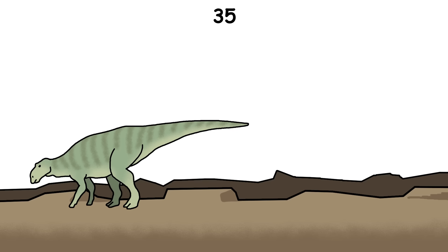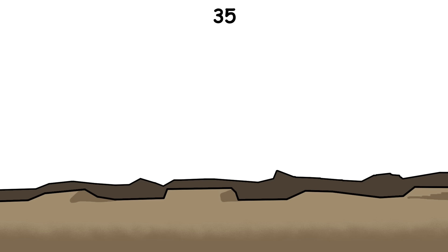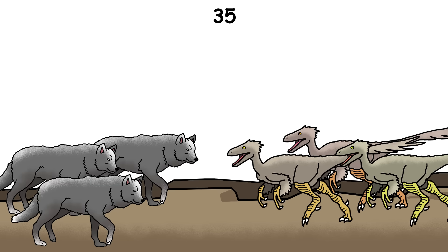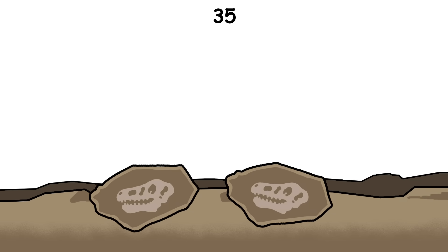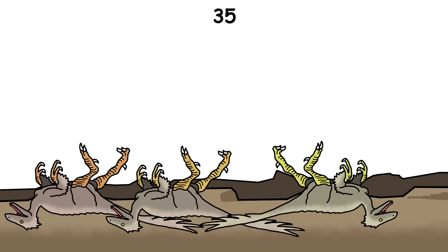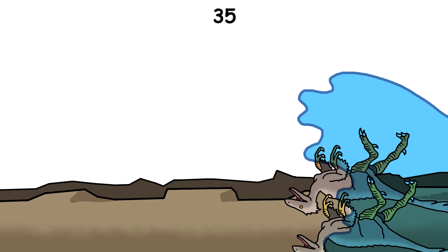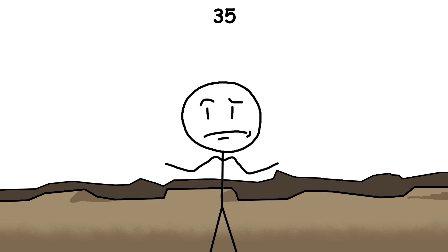We don't really know if dinosaurs hunted in packs. That kind of behavior doesn't show up in fossils, and we don't have anything that clearly proves they work together like wolves do. Sometimes, scientists find fossils of several predators near each other, but that doesn't mean they were hunting together. It could just be a group that died while feeding or were just dragged to the same spot by things like floods. A few scientists think T. rex might have hunted in pairs, but even that isn't certain.